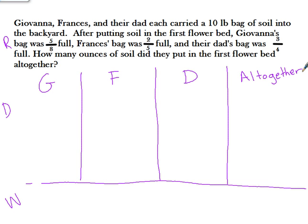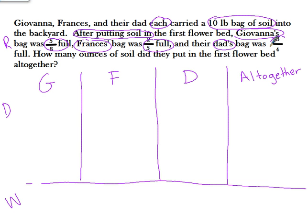Now, Giovanni, Francis, and their dad each carried a ten-pound bag of soil. After putting the soil into the first flower bed, Giovanni's bag was five-eighths full. Francis' bag was two-fifths full, and their dad's bag was three-fourths full.